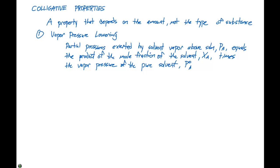times the vapor pressure of the pure solvent, P0A. Raoult's Law expresses this as PA equals XA times P0A, and this is the relationship you can use to solve for vapor pressure lowering.